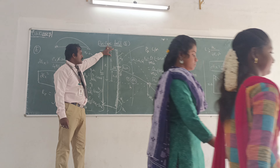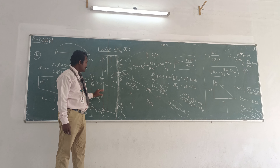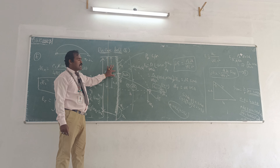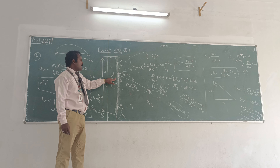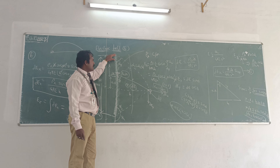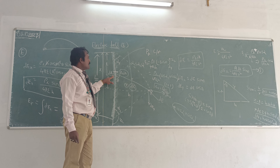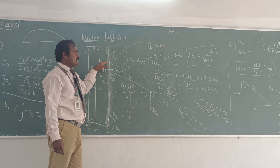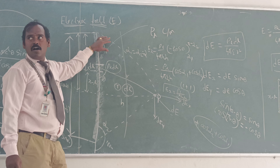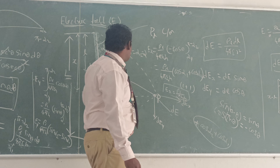Let us consider the uniformly charged line with length capital L. We are going to find the electric field intensity of the smaller portion, that is dL. The dL element is considered at a distance L from one end of the line. The line has a uniform linear charge density rho L, in coulombs per meter.